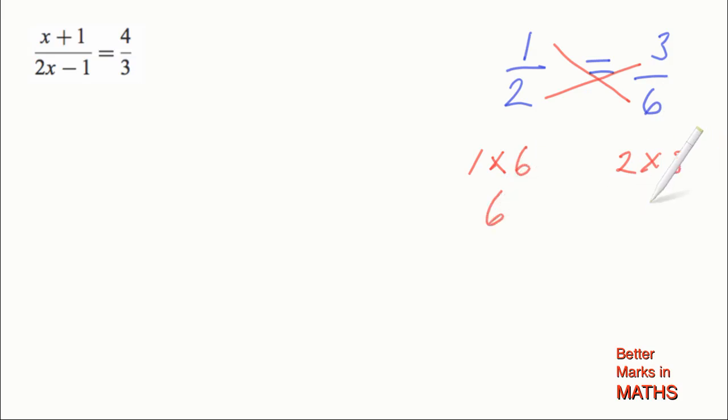1 times 6 is 6, 2 times 3 is 6, and so those two are equal. What that really means is that no matter what two fractions you have that are equal, you can cross multiply and the result you get is still equal.